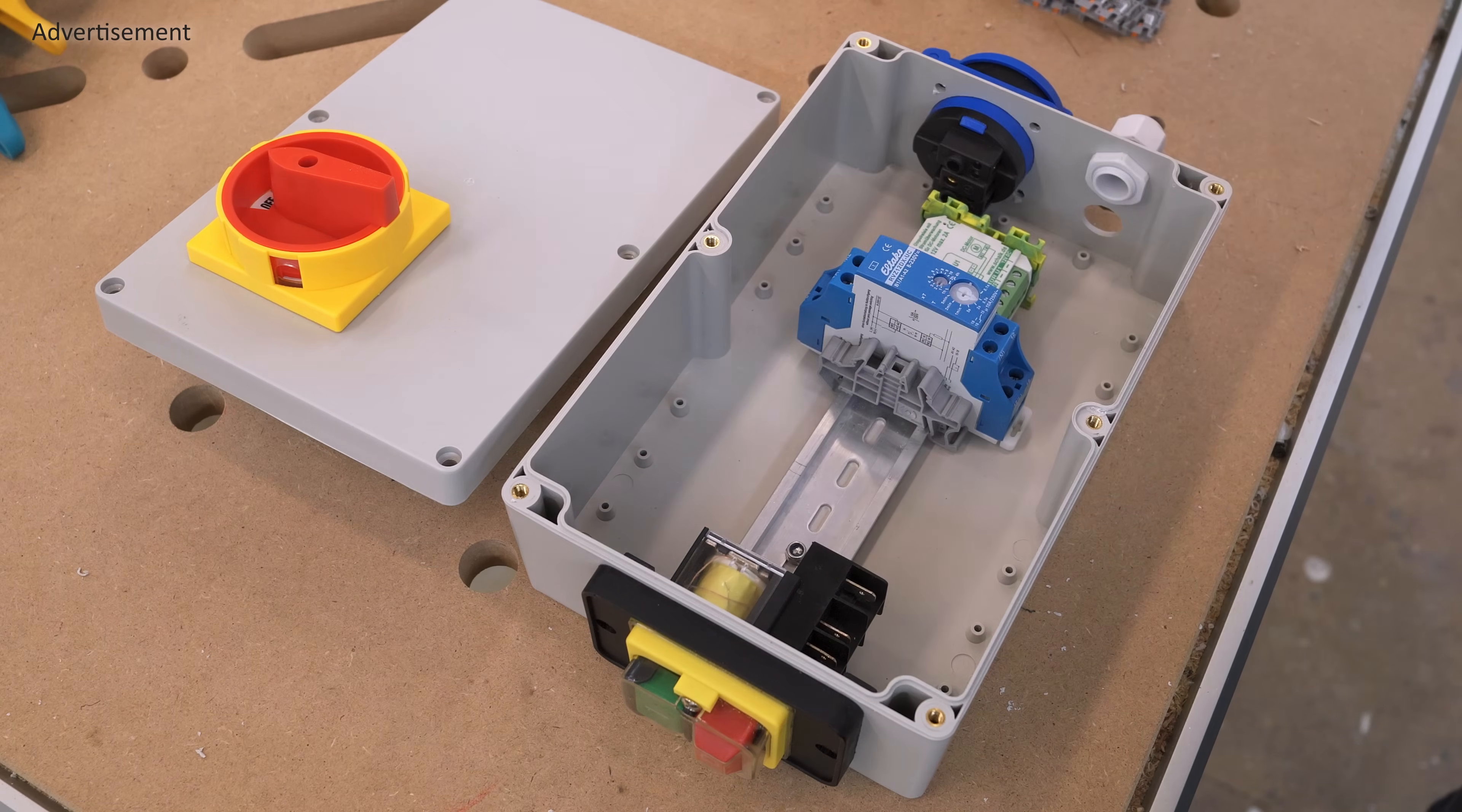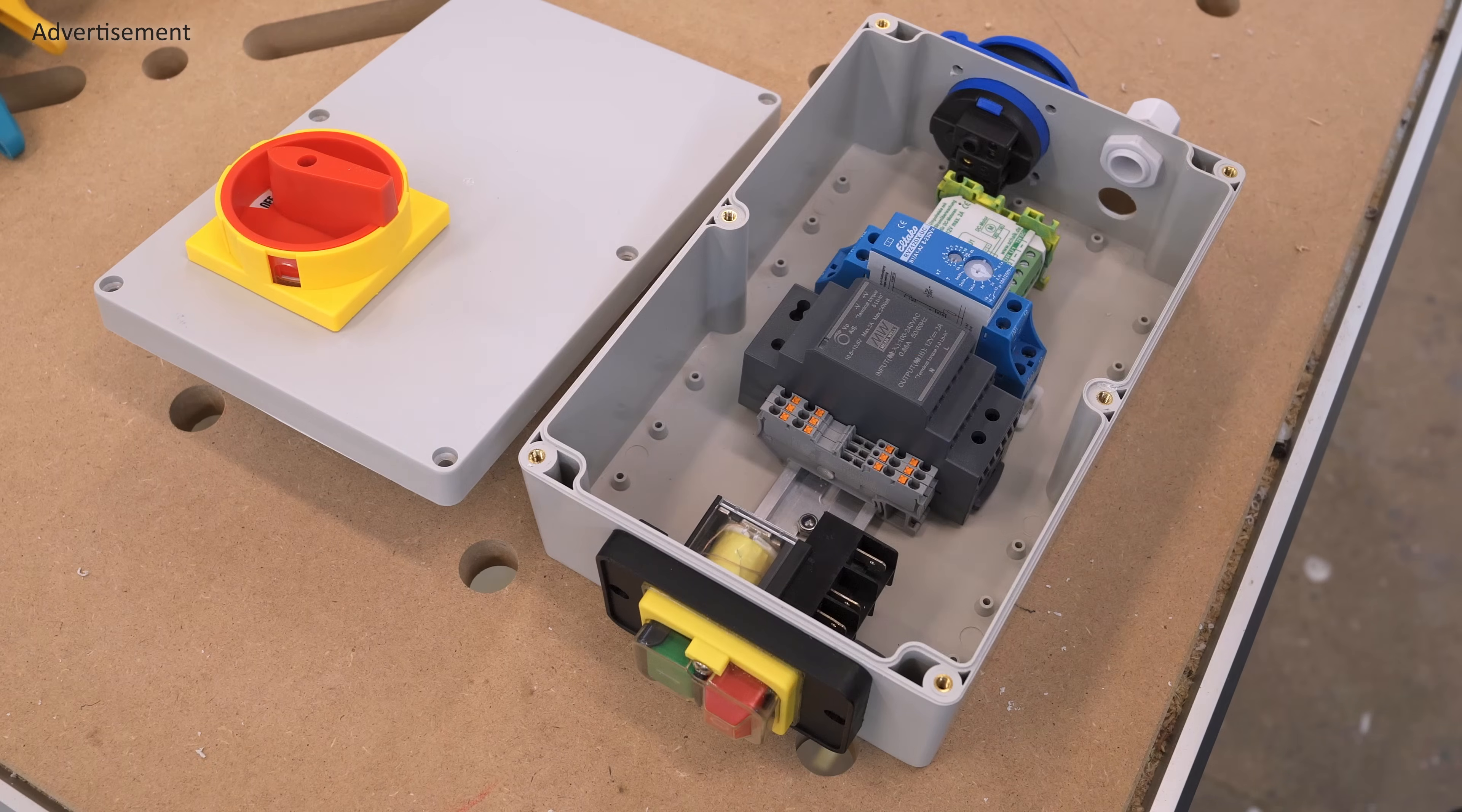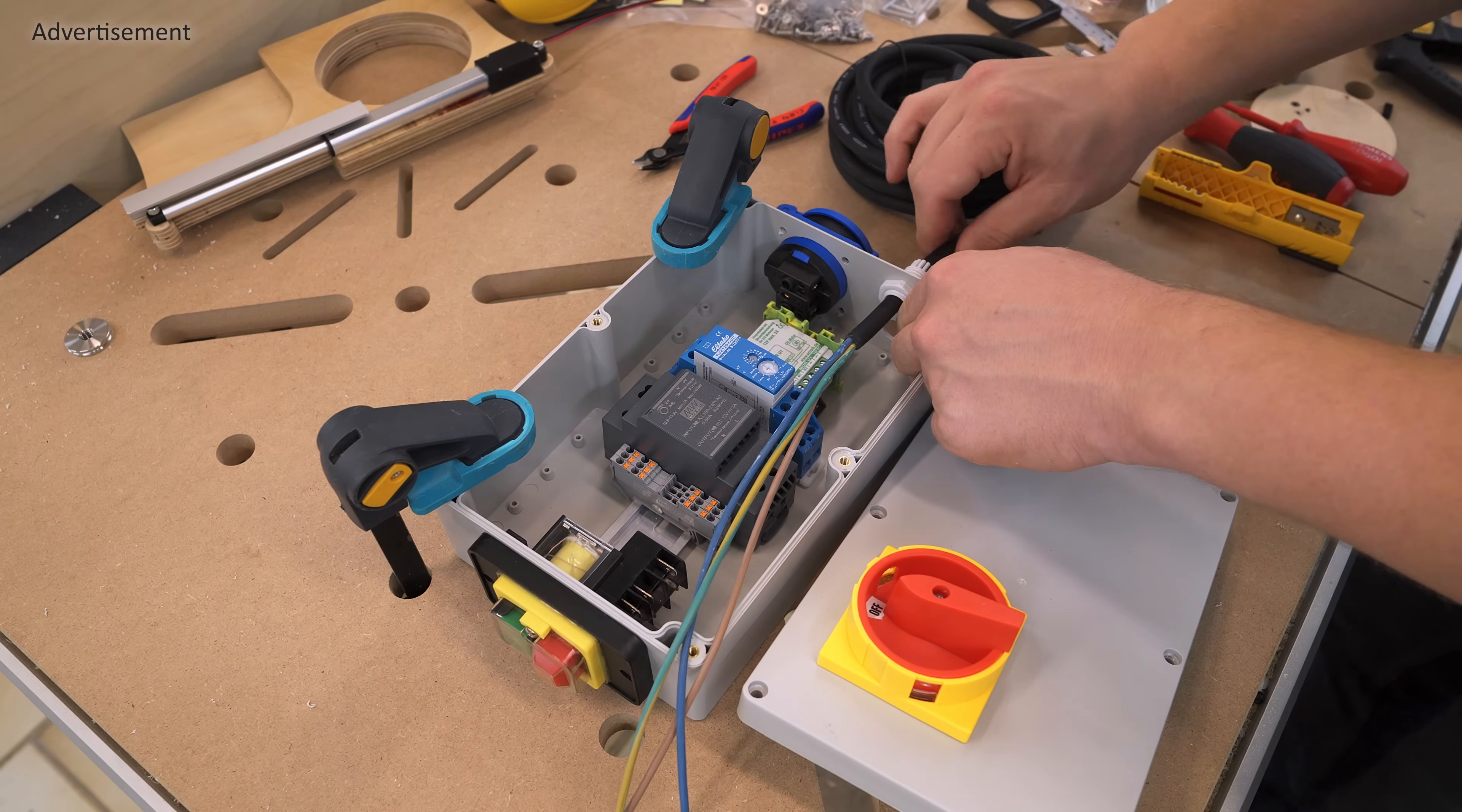Then a spacer between the relay and the power supply, just for good measure. And the power supply to generate 12 volts DC for the actuator. And some more terminal blocks for connecting everything. Now starting with the AC circuit. This will power the magnetic coil of the switch, the power supply, the time relay and of course whatever is plugged into the socket.